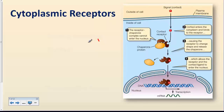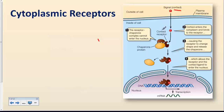Let's look in more detail at cytoplasmic receptors, using the example of a steroid hormone known as cortisol. Cortisol is an important hormone in the body that controls different things — one of which is regulating the metabolism of sugars and carbohydrates. We will talk more about cortisol when we discuss the endocrine system, but for now let's look at the receptor system of a steroid hormone, which is an example of a cytoplasmic receptor.